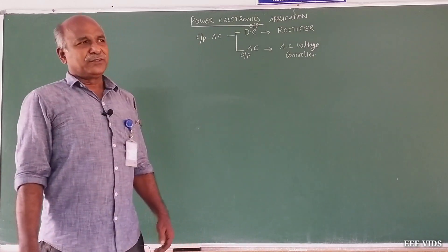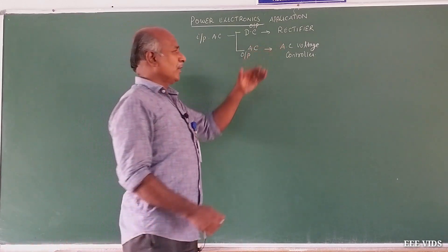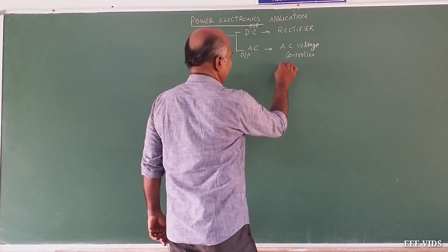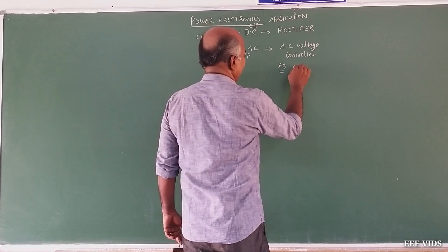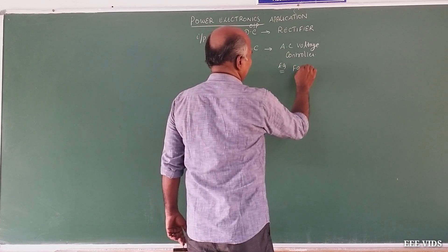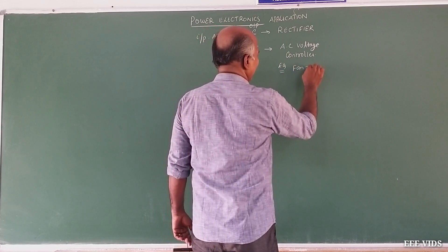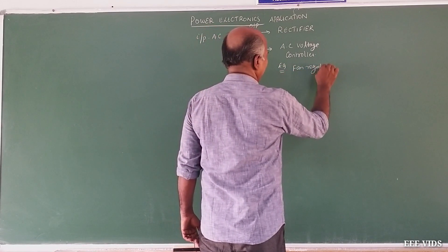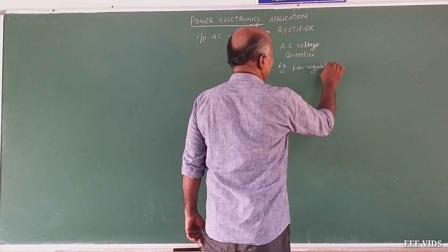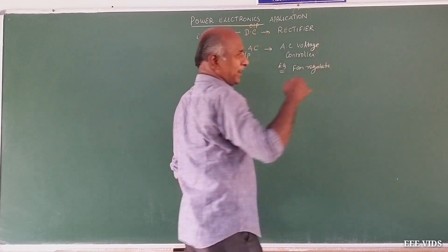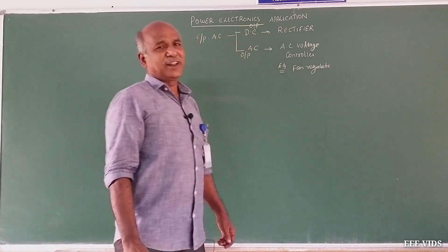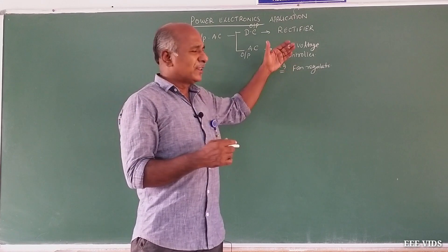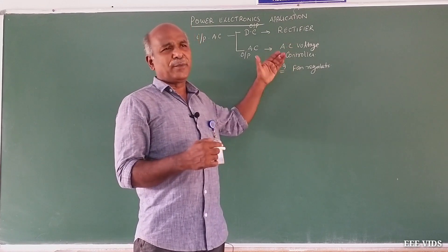For example, a fan regulator. The conventional fan regulator — they will know it. And you can use dim and bright control. They have a dim and bright function, and you can use that circuit.